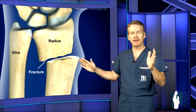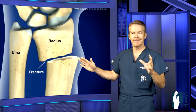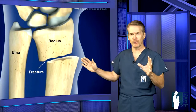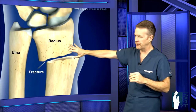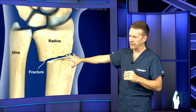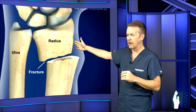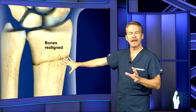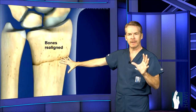In a kid, you can usually pop them back in place and they'll stay. In an adult, it usually takes surgery to correct the problem. Here's a displaced fracture — the ends are not lined up at all. The next image shows the bones realigned, what we call anatomic alignment.